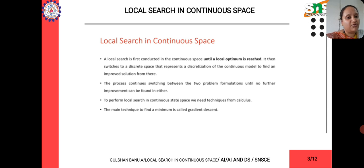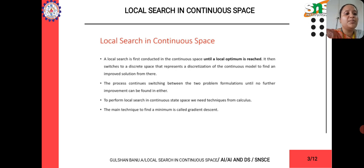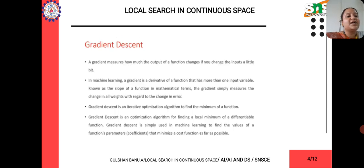To perform local search in continuous state space, we need techniques from calculus. Calculus is one of the techniques used from mathematical operations. The main technique is to find a minimum using the gradient descent method. We will see what gradient descent is and how it is done.